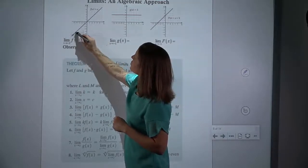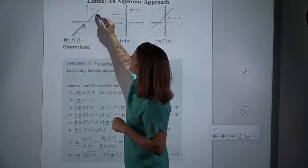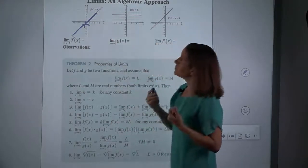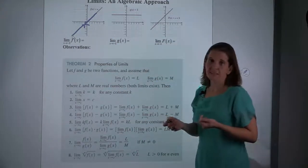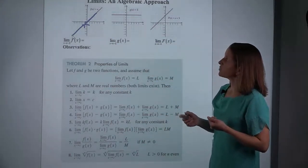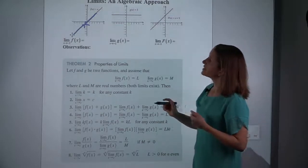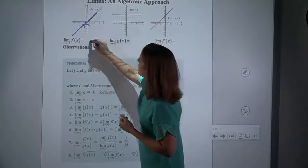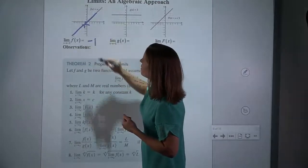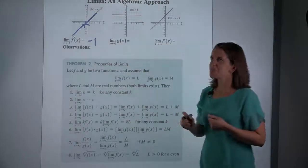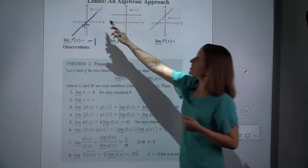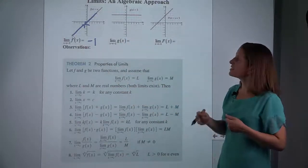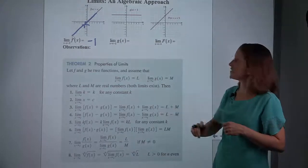We know we have to trace from the left and from the right. And in both cases, as x approaches negative 1, our y is getting closer and closer to negative 1 as well. That should make sense to us because y equals x — the function is y equals x, so whatever x is getting close to, so is y.